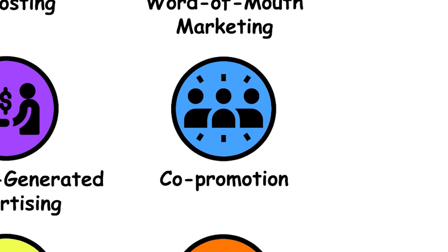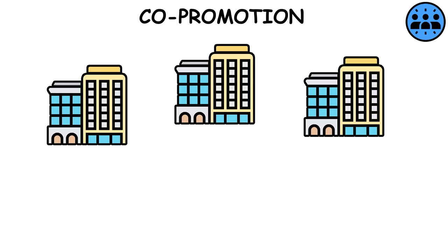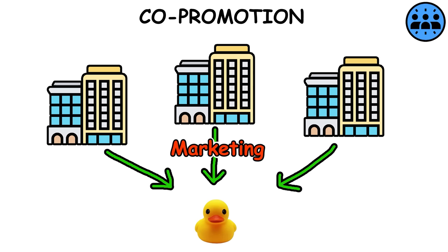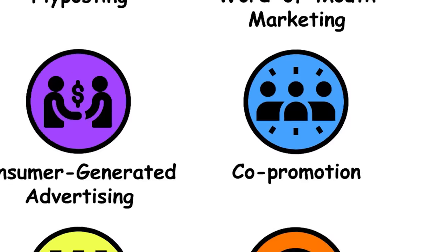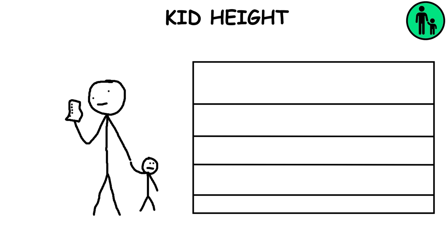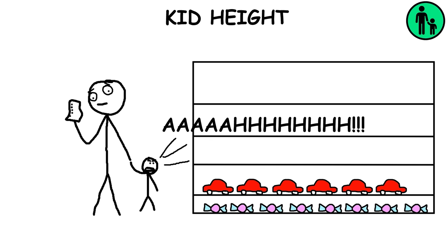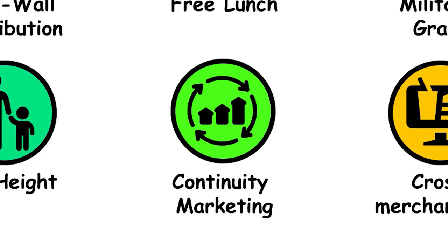Co-promotion: A marketing practice where multiple companies combine their sales forces to promote a product under the same brand using a single marketing strategy. Kid Height: Putting things that kids would like to buy, such as candy or toys, on the lowest shelf so that they can see them and ask their parents to buy them.